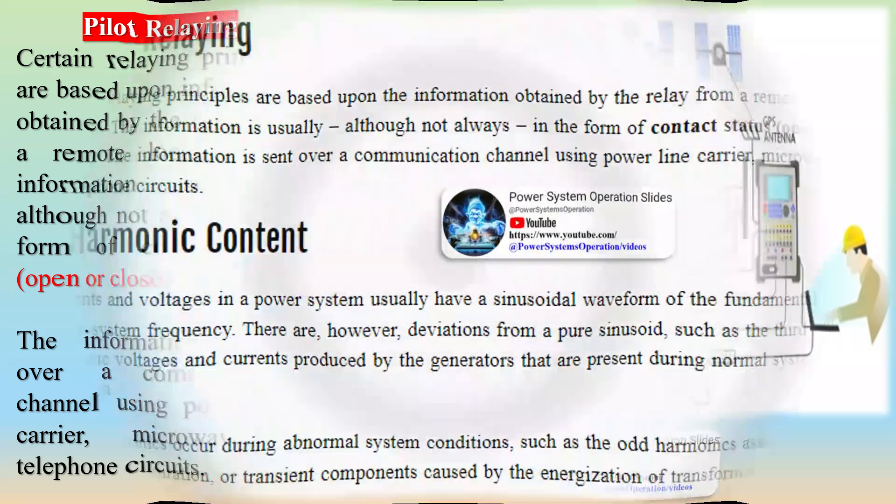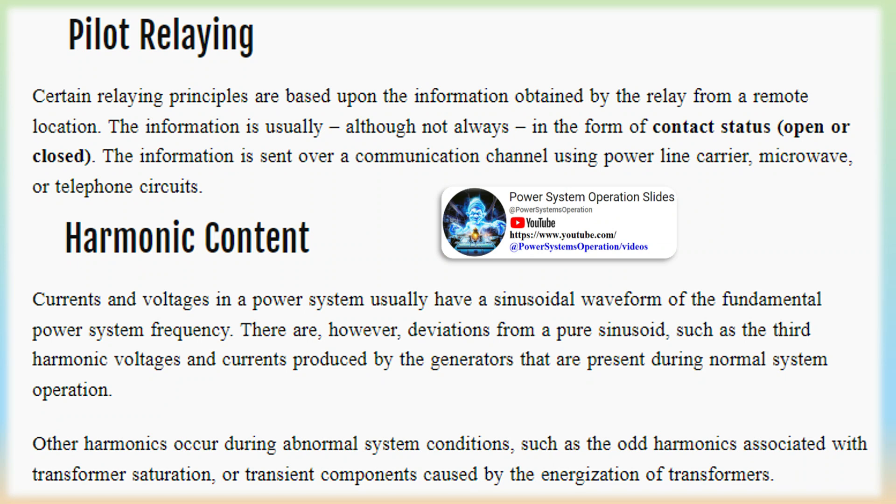Harmonic content. Currents and voltages in a power system usually have a sinusoidal waveform of the fundamental power system frequency. There are, however, deviations from a pure sinusoid, such as the third harmonic voltages and currents produced by the generators that are present during normal system operation.